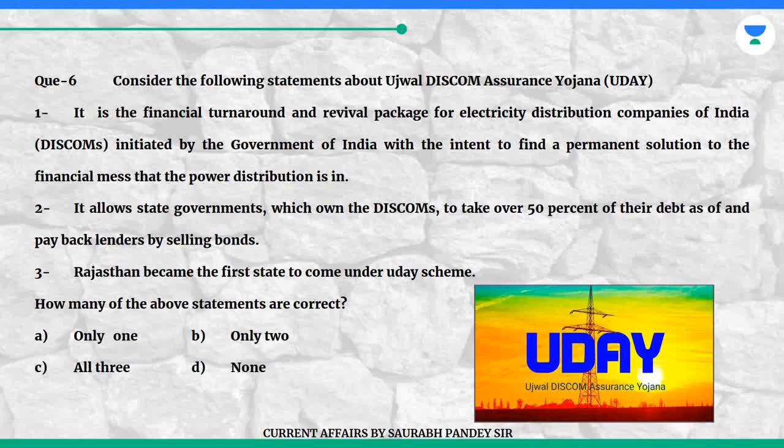Question 6: Consider the following statements about Ujwal DISCOM Assurance Yojana (UDAY). Statement 1: It is the financial turnaround and revival package for electricity distribution companies of India (DISCOMs), initiated by the Government of India with the intent to find a permanent solution to the financial mess that power distribution is in. Statement 2: It allows state governments, which own the DISCOMs, to take over 50% of their debt and pay back lenders by selling bonds. Statement 3: Rajasthan became the first state to come under the UDAY scheme.